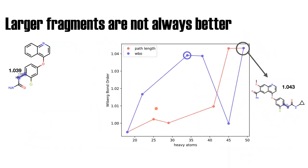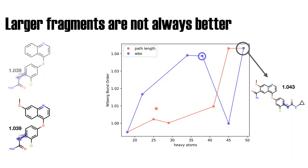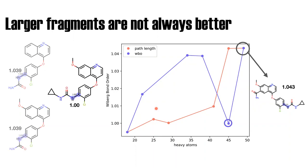It also gets complicated because larger fragments are not necessarily better. Adding an additional ring can change the electronics and push the Wiberg bond order further from the target. These effects are pretty long-range. I'm currently running some torsion scans for cases where the differences are big to see how different the torsion scans actually are. Basically, given a certain threshold, you try to go with what gives you the smallest fragment for that threshold.